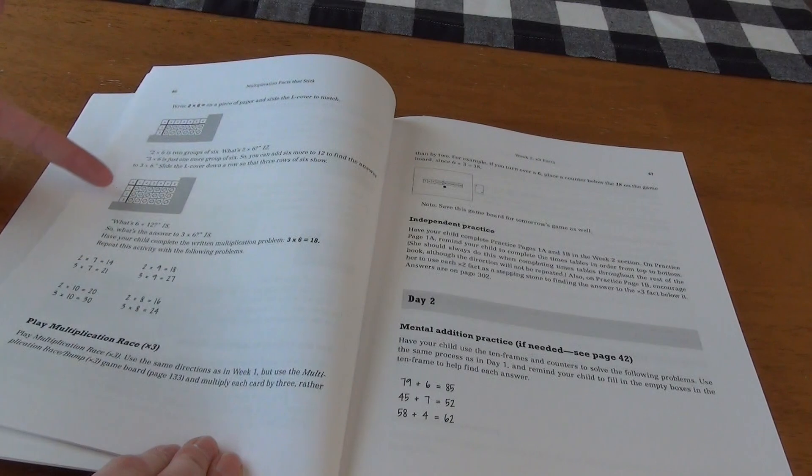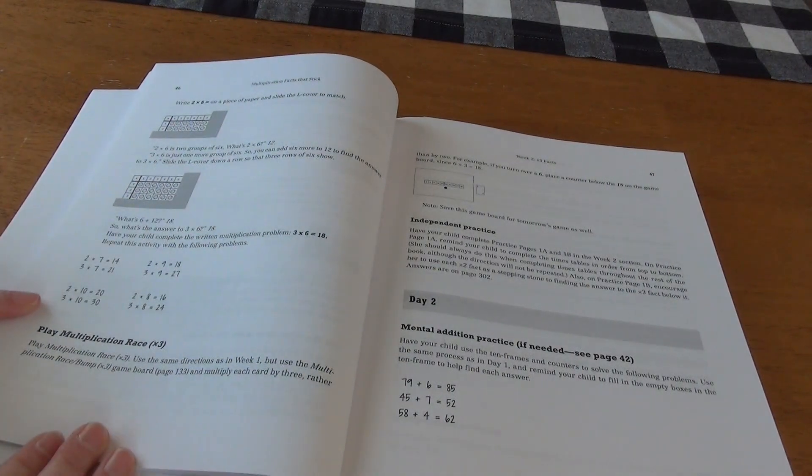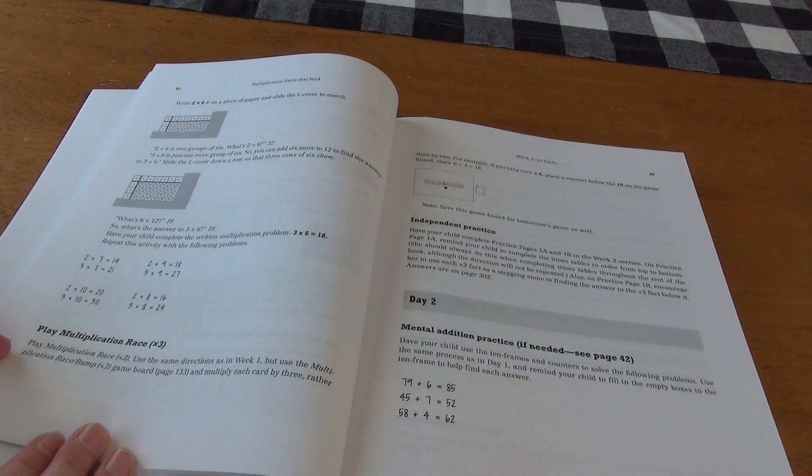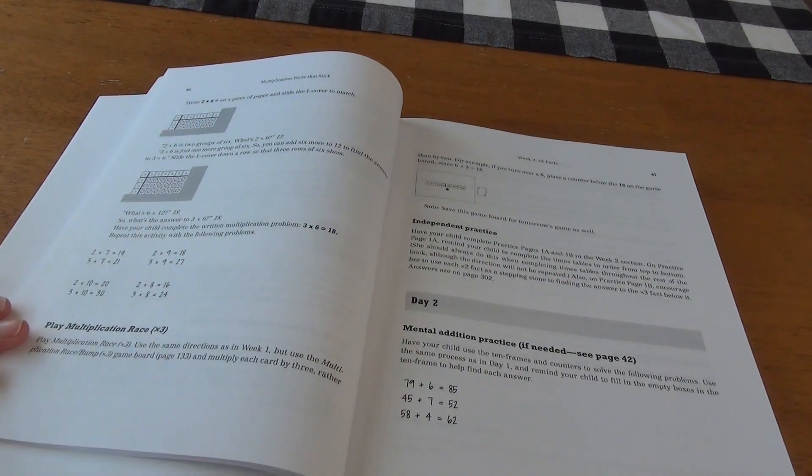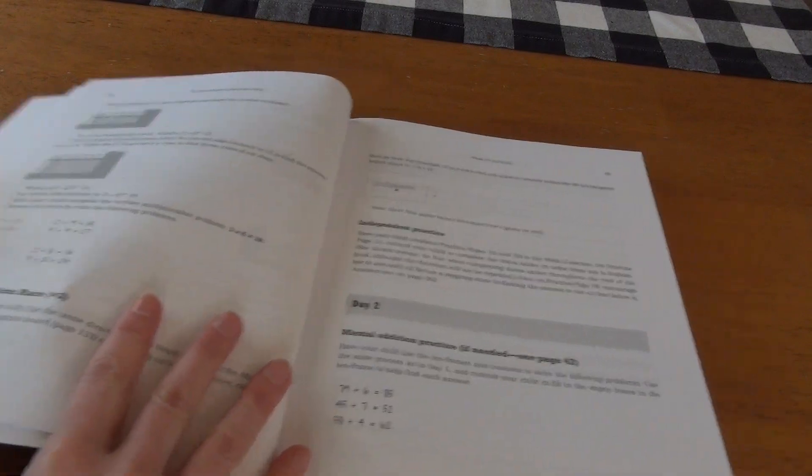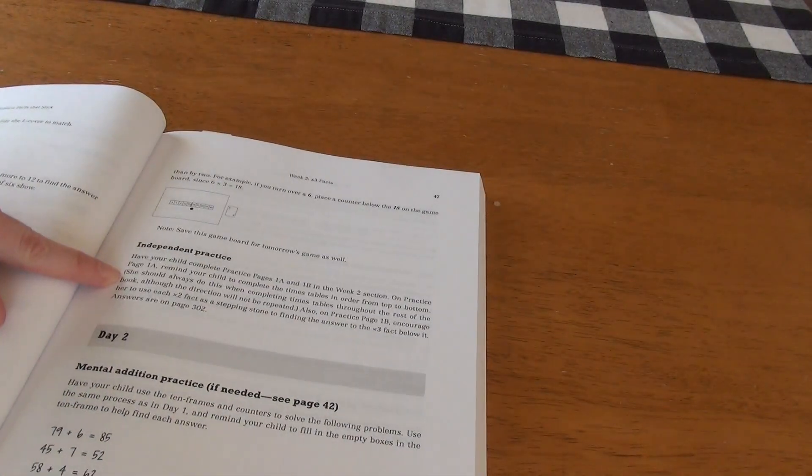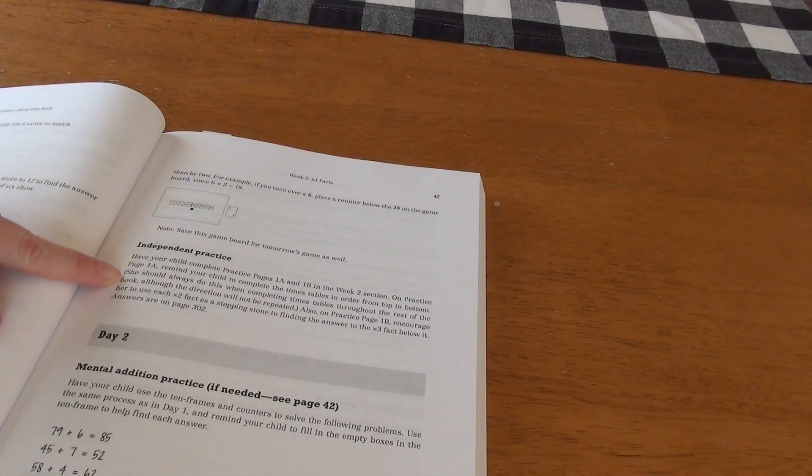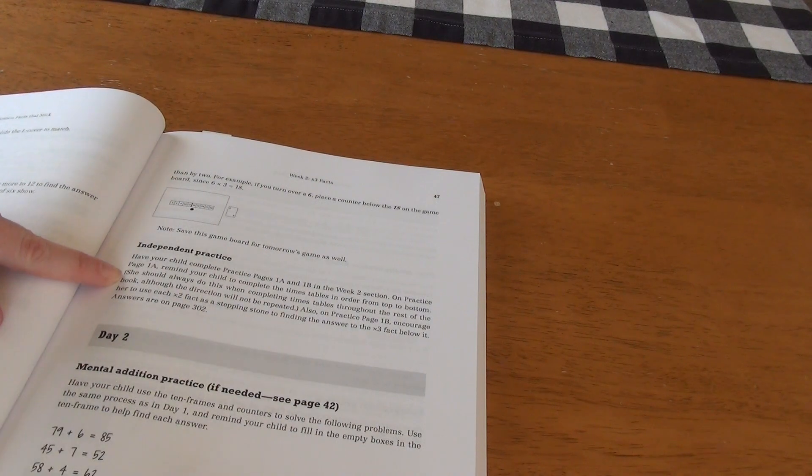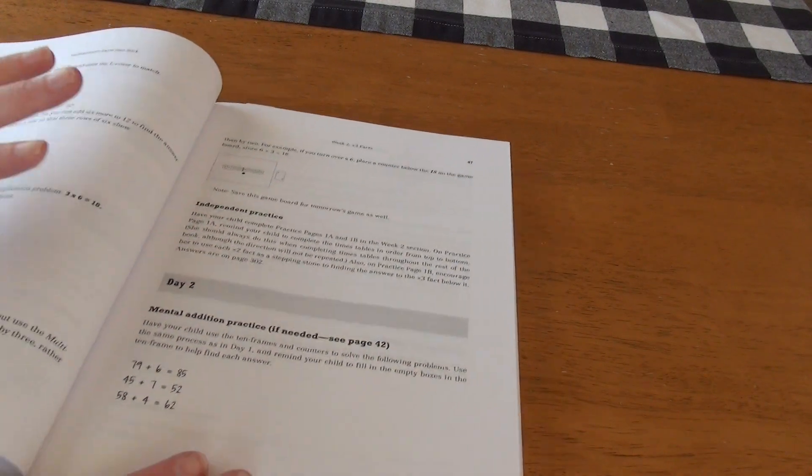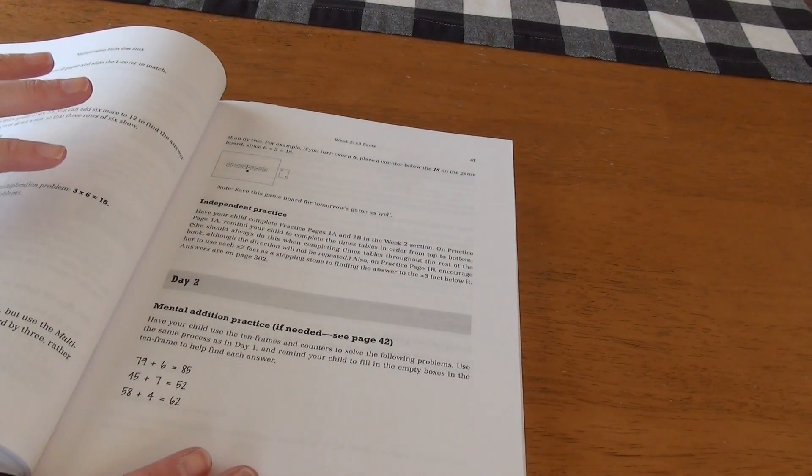Then we're going to go ahead and we're going to use the facts that we learned in our previous week to learn our times three facts. We continue to work on this. We write some problems and then we get to play our game, which is play multiplication race. Again, back of the book, everything you're going to need is in there. Then we have our independent practice where they can practice the practice pages that are in the very back of the book. And that is all for day one.